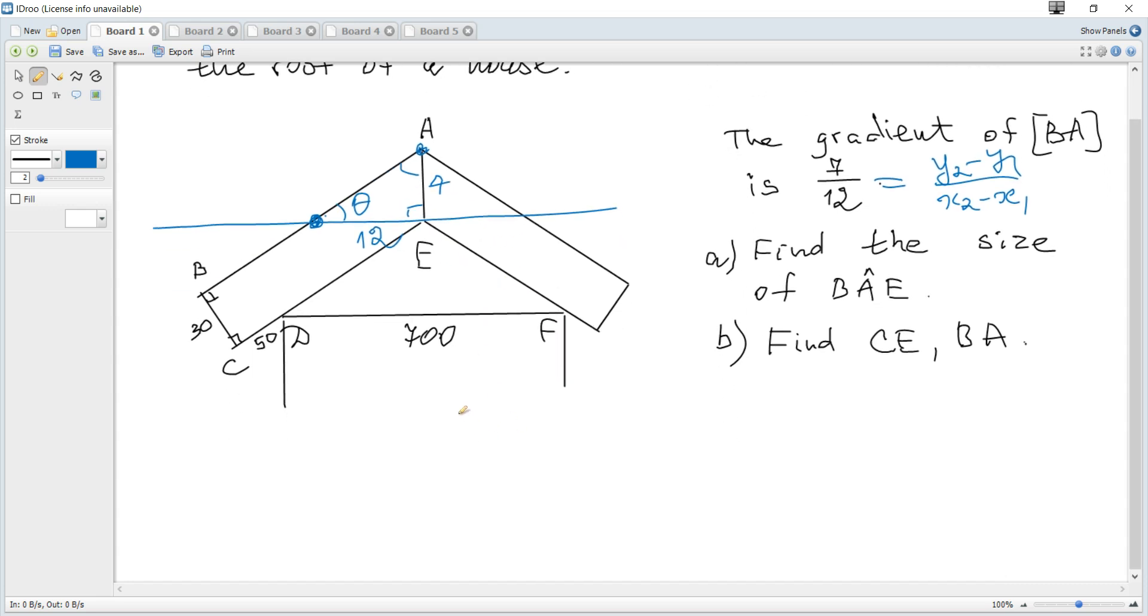The required angle BAE can be found as 90 degrees minus inverse tangent, or arctangent, of 7 over 12. Degrees required here. Or it can be found directly.